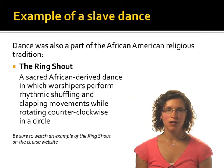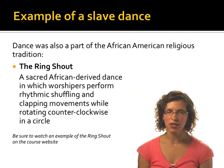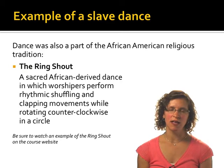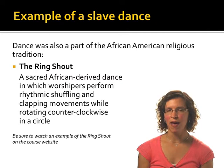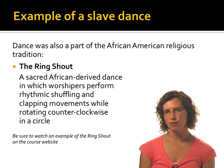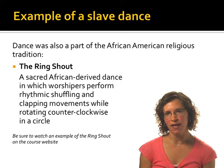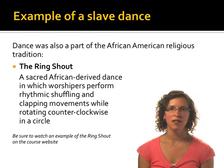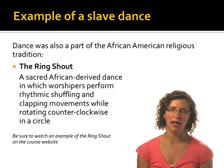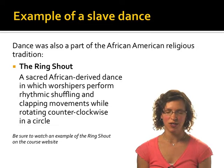One important dance that emerged during slavery is called the ring shout, which also had important ties to black religious traditions. The ring shout was a sacred, African-derived dance in which participants performed a kind of rhythmic shuffling step and clapping movements while rotating counterclockwise in a circle. Scholars have speculated that it evolved because Christianity, which was forced on many slaves, prohibited dancing — and one criterion for dancing was the crossing of the feet. By developing this shuffling style in which their feet didn't actually cross, they were able to evade the ban on dancing and yet practice the ring shout.